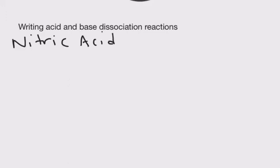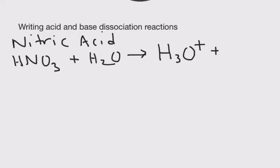If you recall, nitric acid is HNO3. We put this in water and it dissociates completely because it's a strong acid. This is a one-directional arrow and we get hydronium ion and nitrate ion.